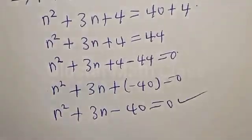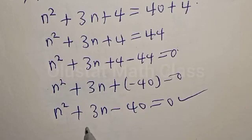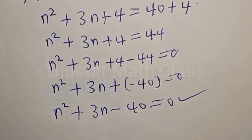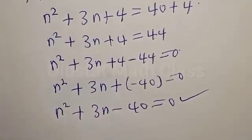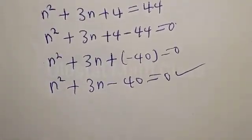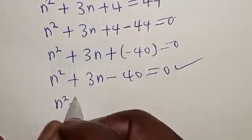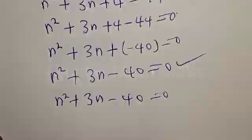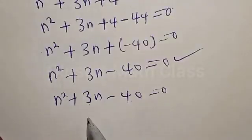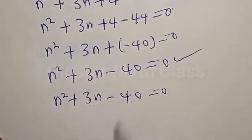This is a quadratic equation and can be solved by either the factorization method or the quadratic general formula. But in this case, let's use the factorization method. We have n squared plus 3n minus 40 is equal to 0.